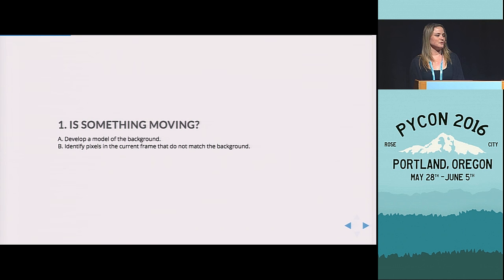So first of all, is something moving? So this is kind of your classic motion detection. A lot of times it's called background subtraction, figuring out basically developing a model of the background that you have in your view of your camera, and then identifying when there are pixels that are not fitting in that background.